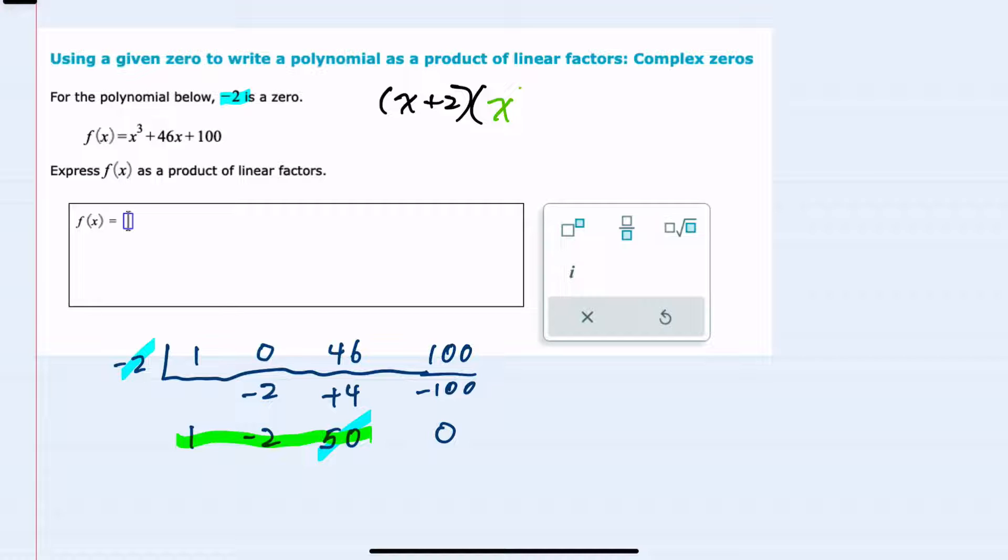And looking at the last line in our synthetic division, this would give us a leading coefficient of 1, so 1x squared. The next is minus 2, so minus 2x. And then 50 would be plus 50. We've completed the first step in writing it as linear factors.